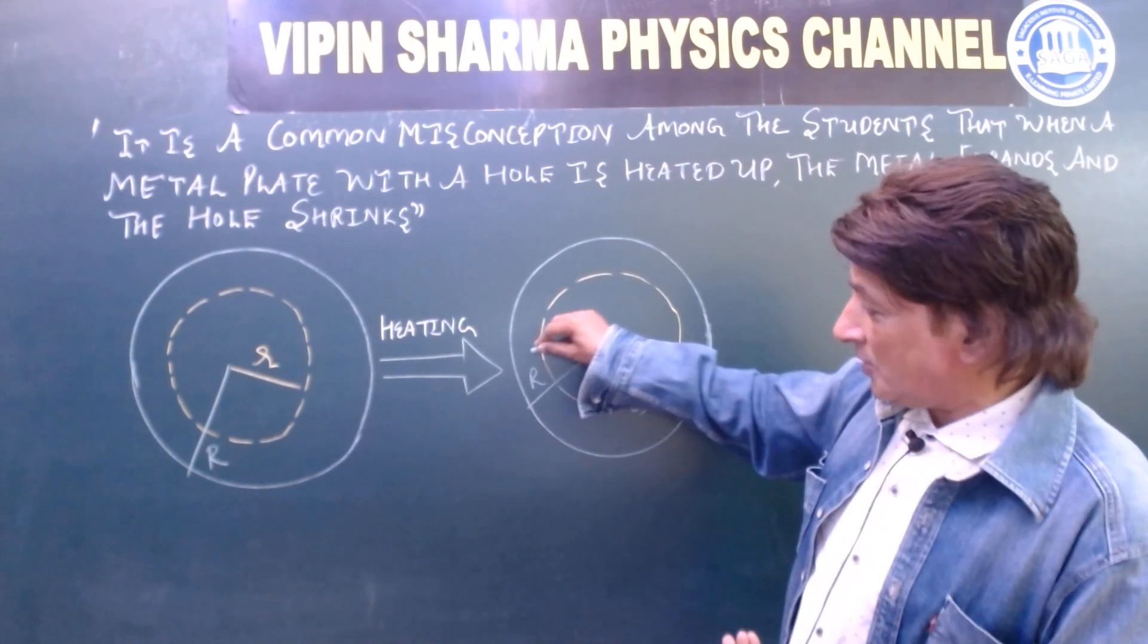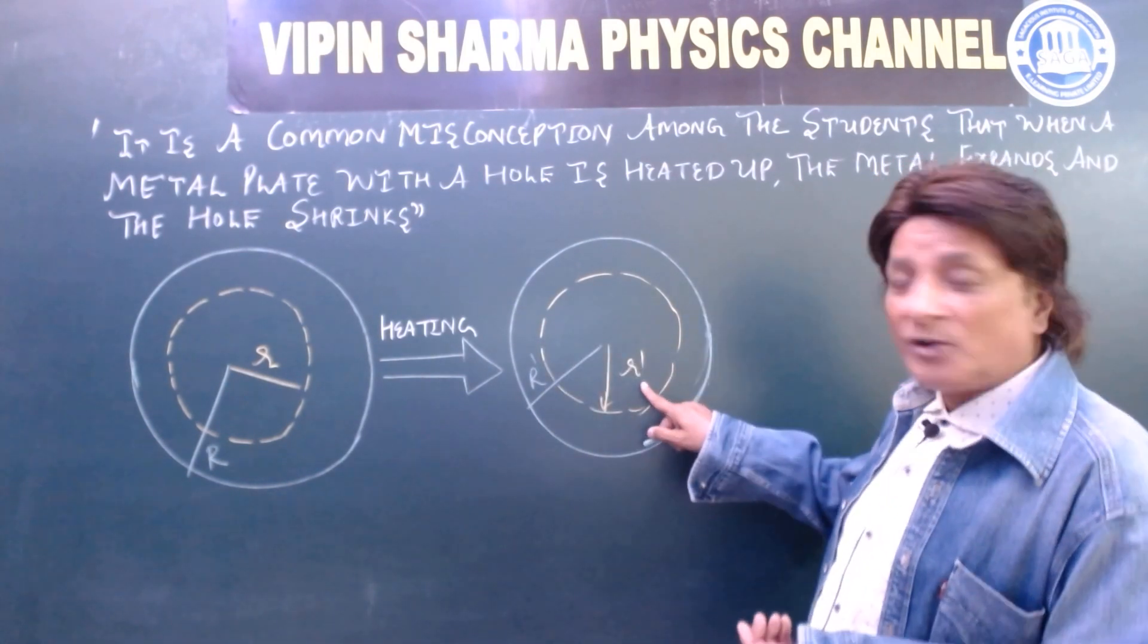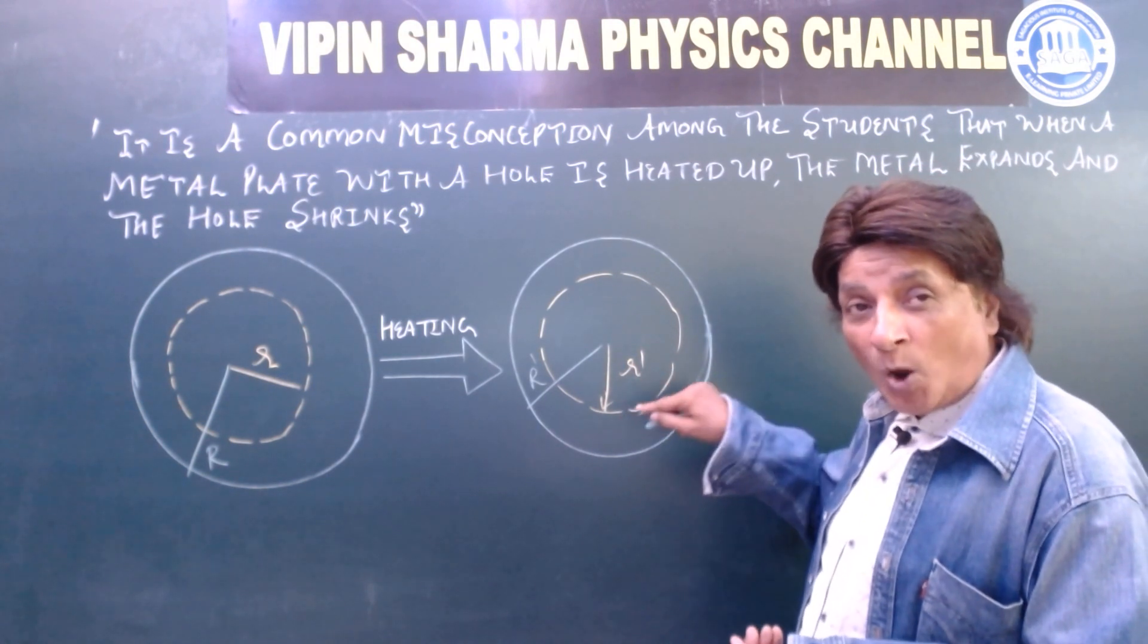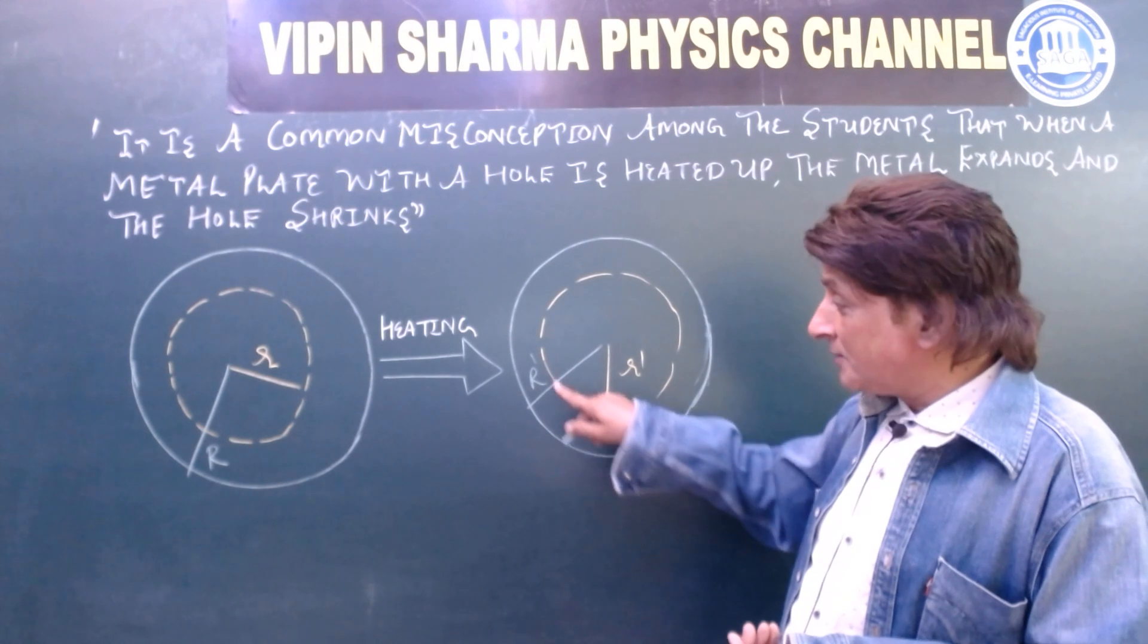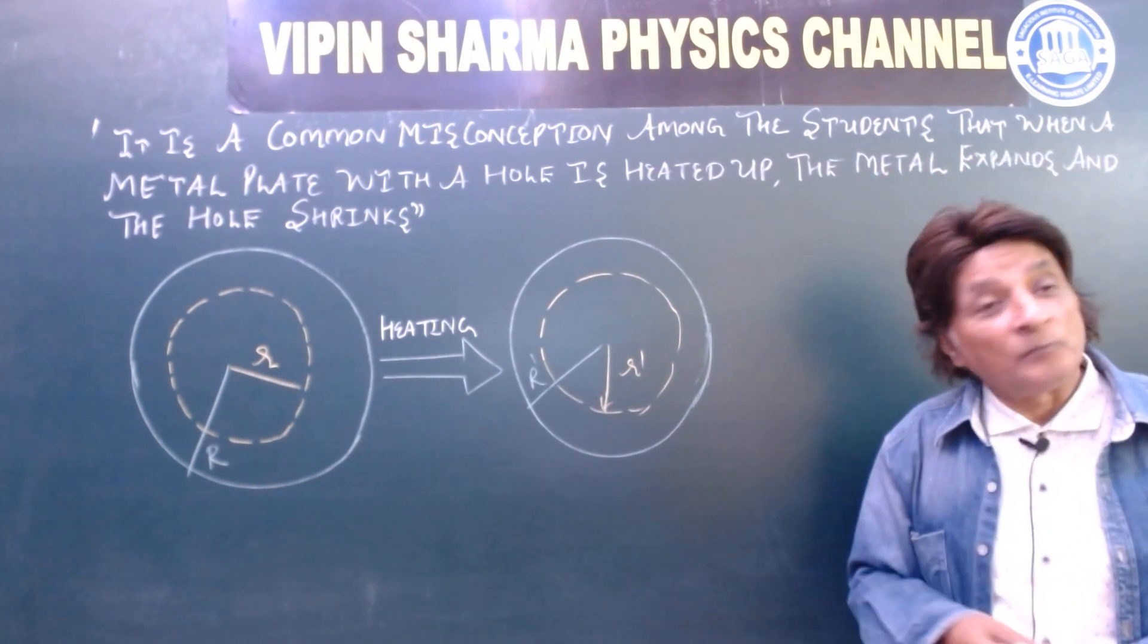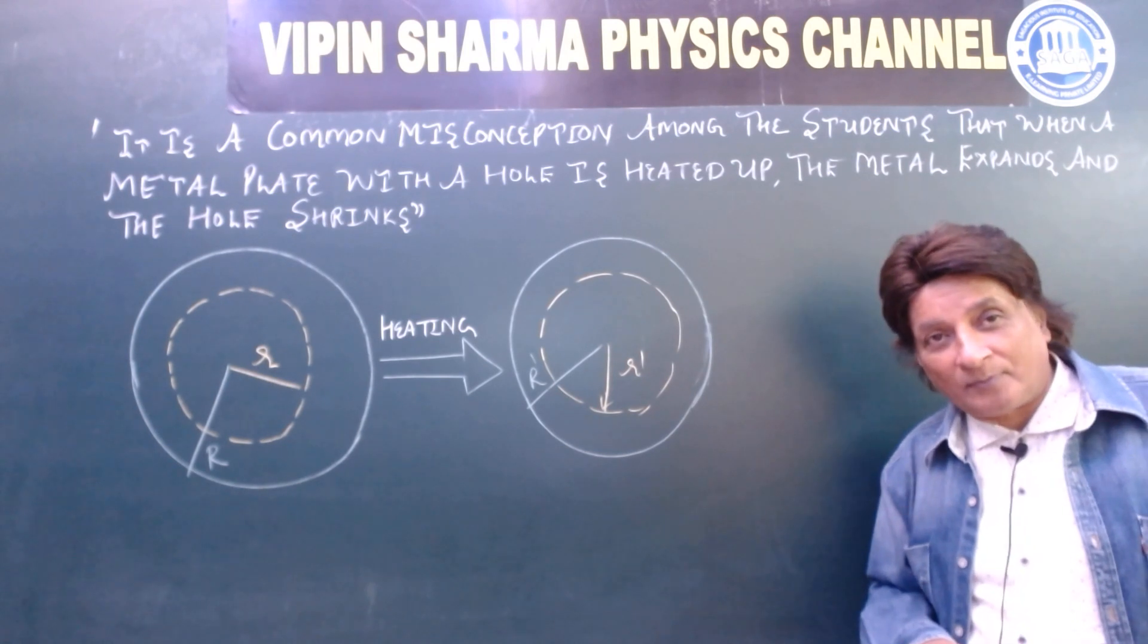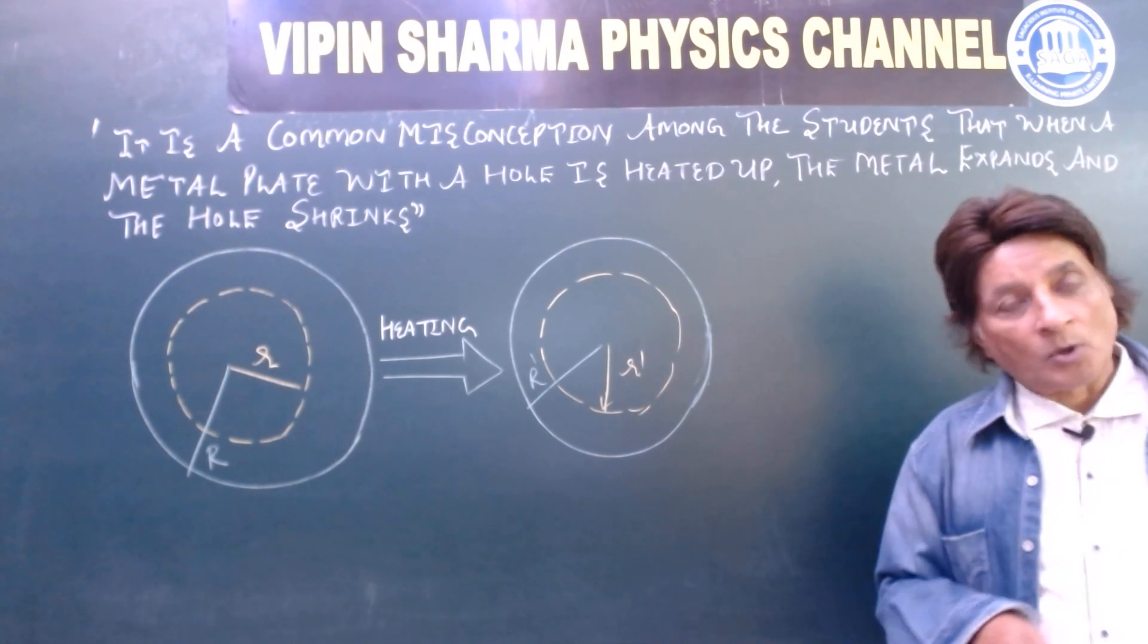The radius is changing. R dash, radius of the hole. R dash capital, radius of the metal plate.